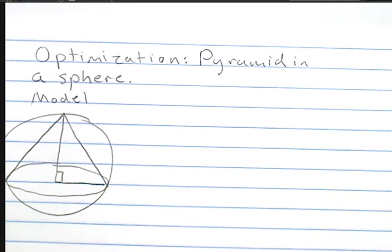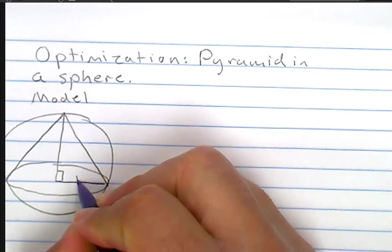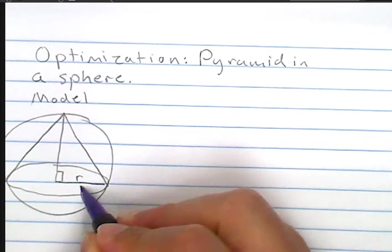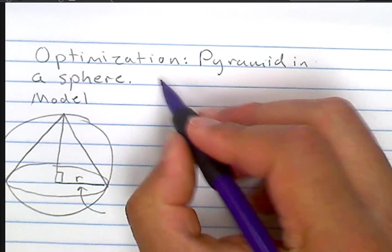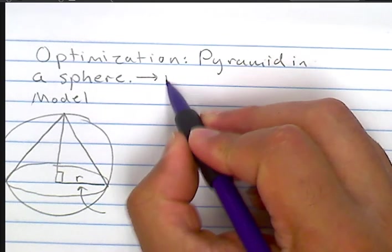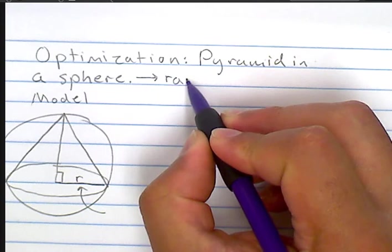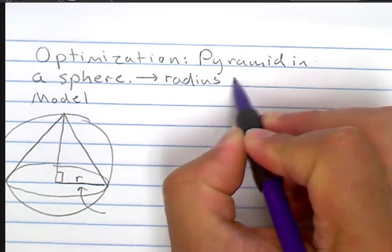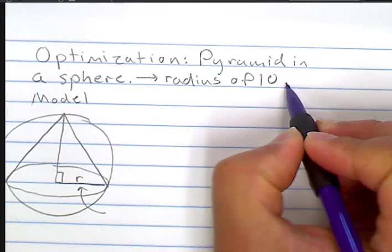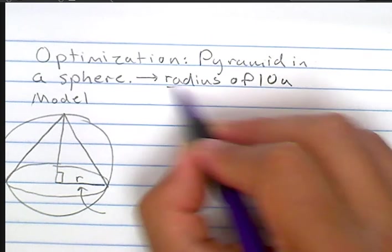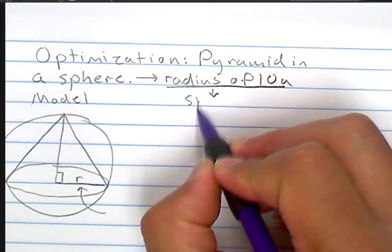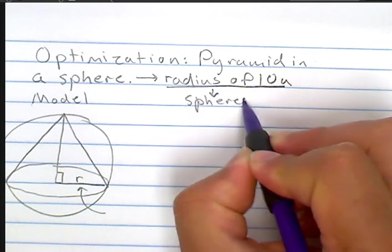We've got this circular pyramid inside of a sphere. Here's the model. What we need to understand is the different parts of this. The sphere has a radius of 10 units, 10 units. And this is the sphere's radius.